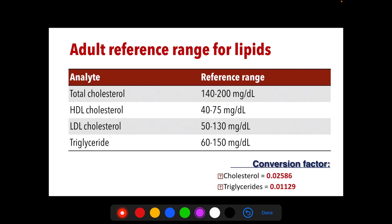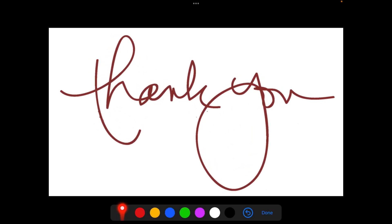For adult reference ranges for lipids: triglyceride and LDL require a 12-hour fasting requirement, whereas total cholesterol and HDL do not require fasting. To convert conventional units to SI units, multiply cholesterol values by 0.02586, and triglyceride values by 0.01129. That concludes the discussion on measurements of lipids in the laboratory.